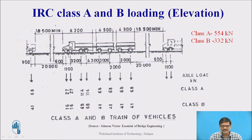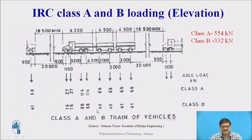For class B, the configuration is the same as class A, but the magnitude of the loads is different. For class A the axle loads were 27, 27, 114, and so on, whereas for class B the magnitudes are reduced — for example, 16, 16, then 68, 68, 41, 41. Class B loading is approximately 60% of class A; the only difference between class A and class B is the magnitude of the load.